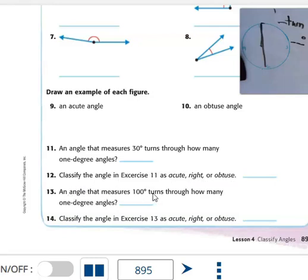An angle that measures 100 degrees turns through how many one-degree angles? Just like what you did for number eleven, you're going to do the same thing for number thirteen, except instead of using 30, you're going to use 100. And then you're going to label that as acute, right, or obtuse.